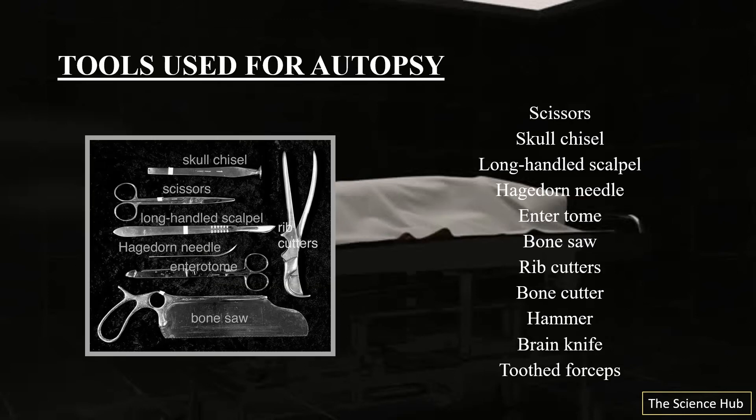The tools used for autopsy include scissors, skull chisel, long-handled scalpel, enterotome, bone saw, rib cutters, bone cutters, hammer, brain knife, and toothed forceps.